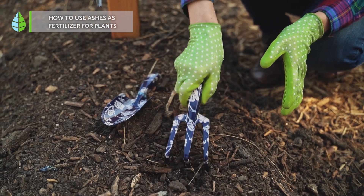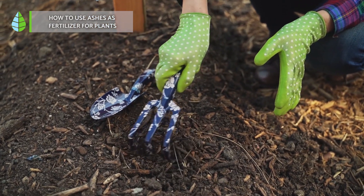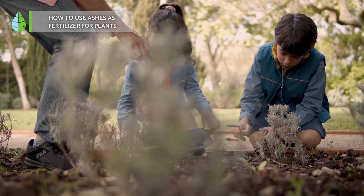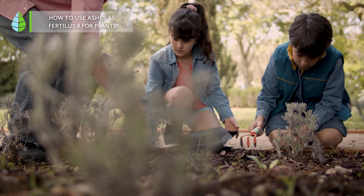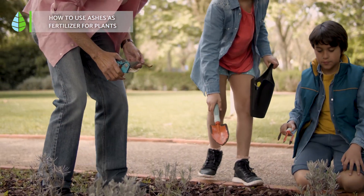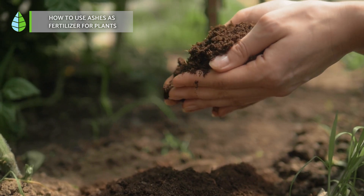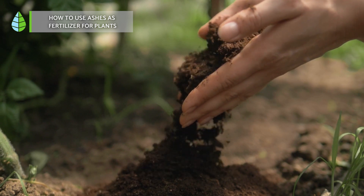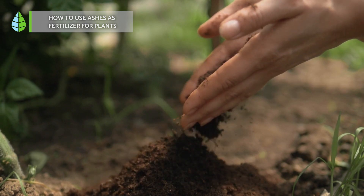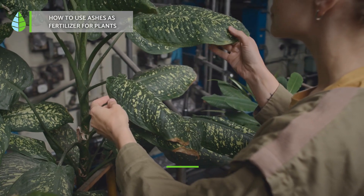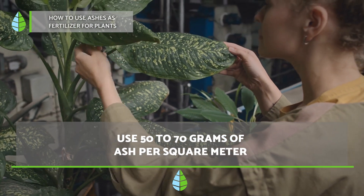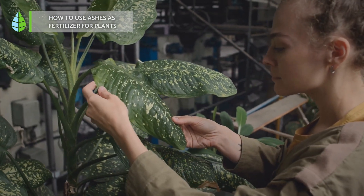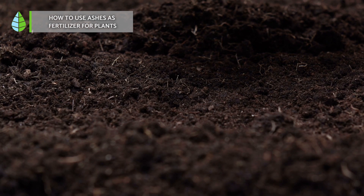Applying it in winter ensures that it will not be harmful when spring comes. If you want to use it as a pest repellent, spread the ash around the plant as mulch. You can also add a handful to existing fertilizer such as worm castings or manure. Use 50 to 70 grams of ash per square meter. It should only be used occasionally because it alkalizes the soil too much, provides many mineral salts and can be counterproductive.